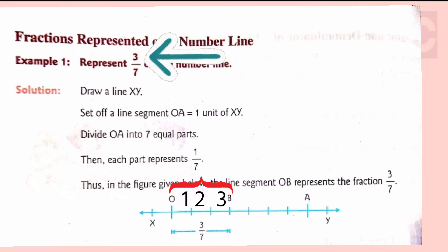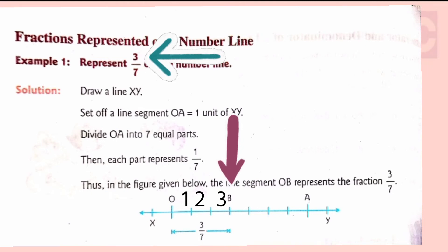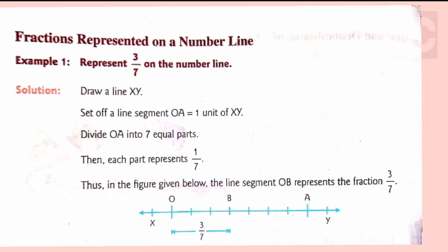This is the 1st part, this is the 2nd part, and this is the 3rd part. The point at the end of the 3rd part, we will name this point as point B. So on this number line, the line segment OB represents the fraction 3 by 7, because 3 is the total number of parts we are considering out of the 7 equal parts in which we have divided OA.